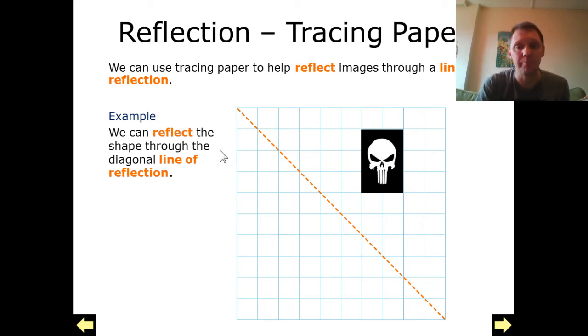Here we've got an example where my line of reflection is a diagonal one, and here's my object, which is going to create an image roughly in this area just here.